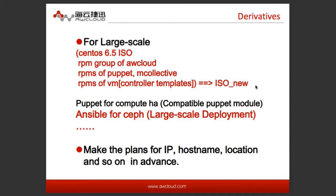And its derivatives: for large-scale, send OS new, DMO ISO, RPM group of AdapCloud, RPMs of Puppet and mcollective, RPMs of virtual machine, and control templates — it can produce ISO new. For nice-scale deployment: Puppet for computer HA, compatible Puppet model, because the old model is the Puppet model. And Ansible for safe. We can also provide virtual machine or physical machine for Docker. By experience, we should also make plans for IP, hostname, location, and so on in advance.